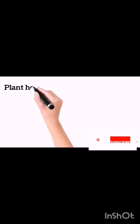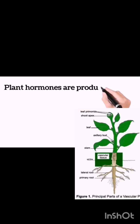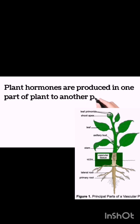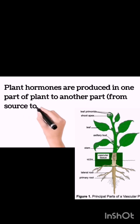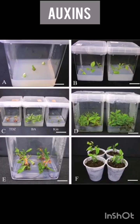Plant hormones are produced in one part of the plant and transported to another part, from source to target. Auxins are a powerful growth hormone produced naturally by plants. They are found in shoot and root tips and promote cell division, stem and root growth.